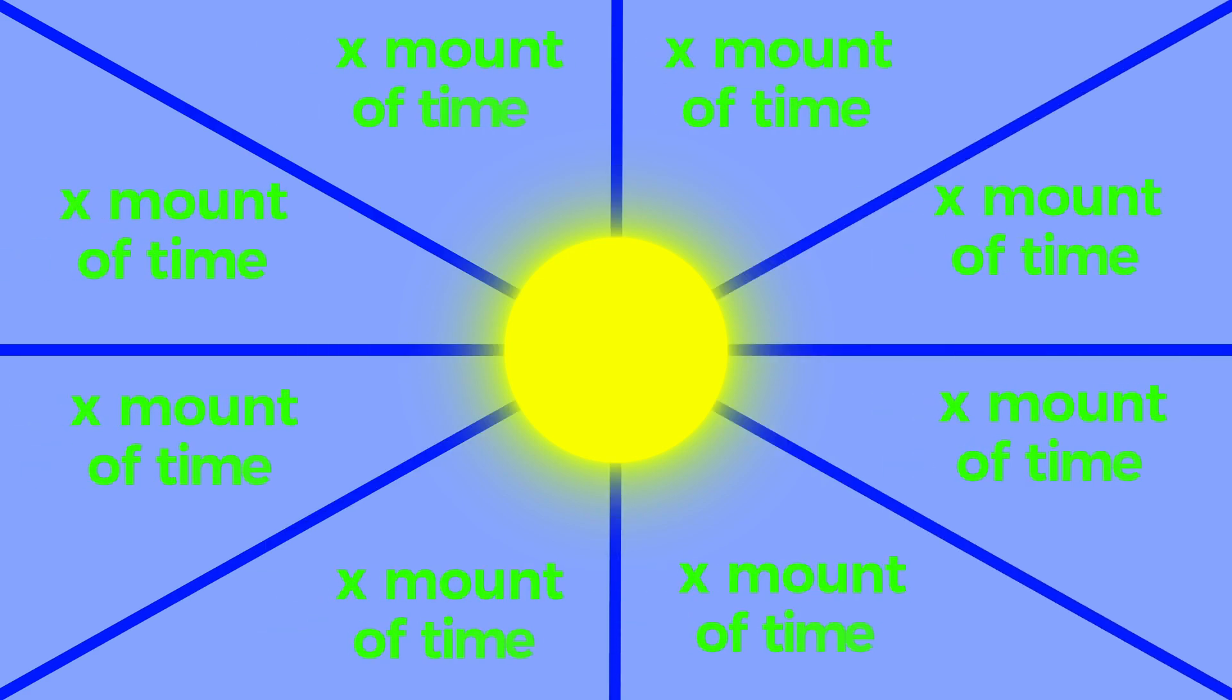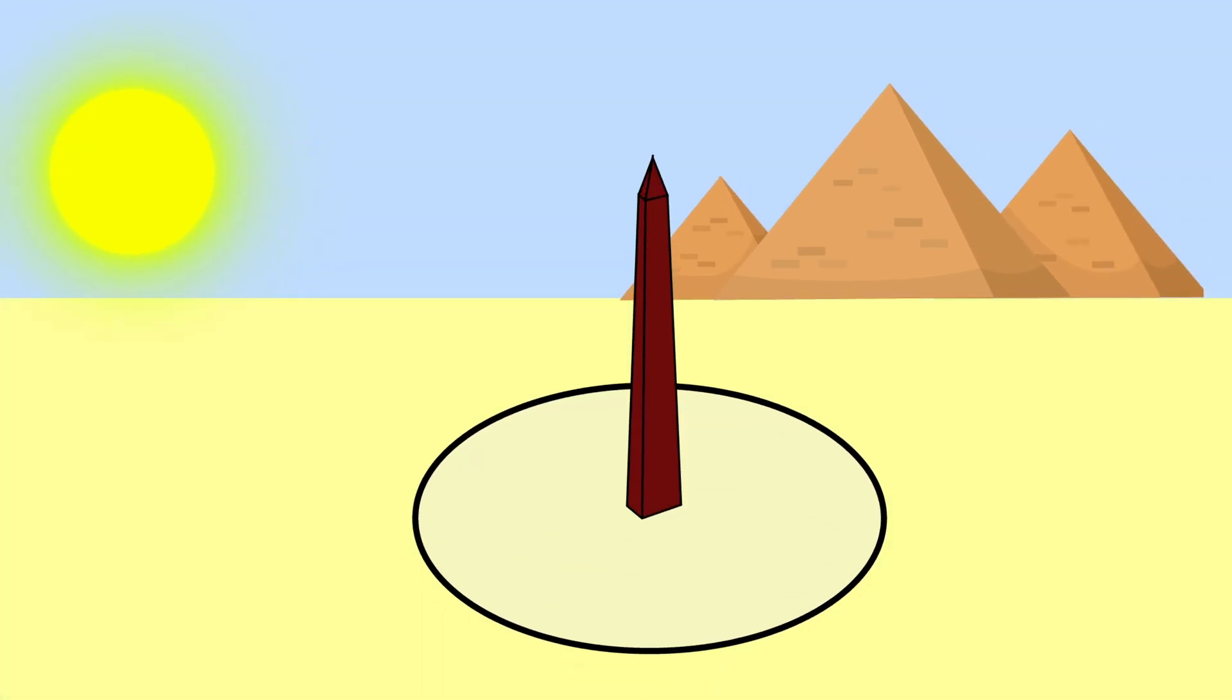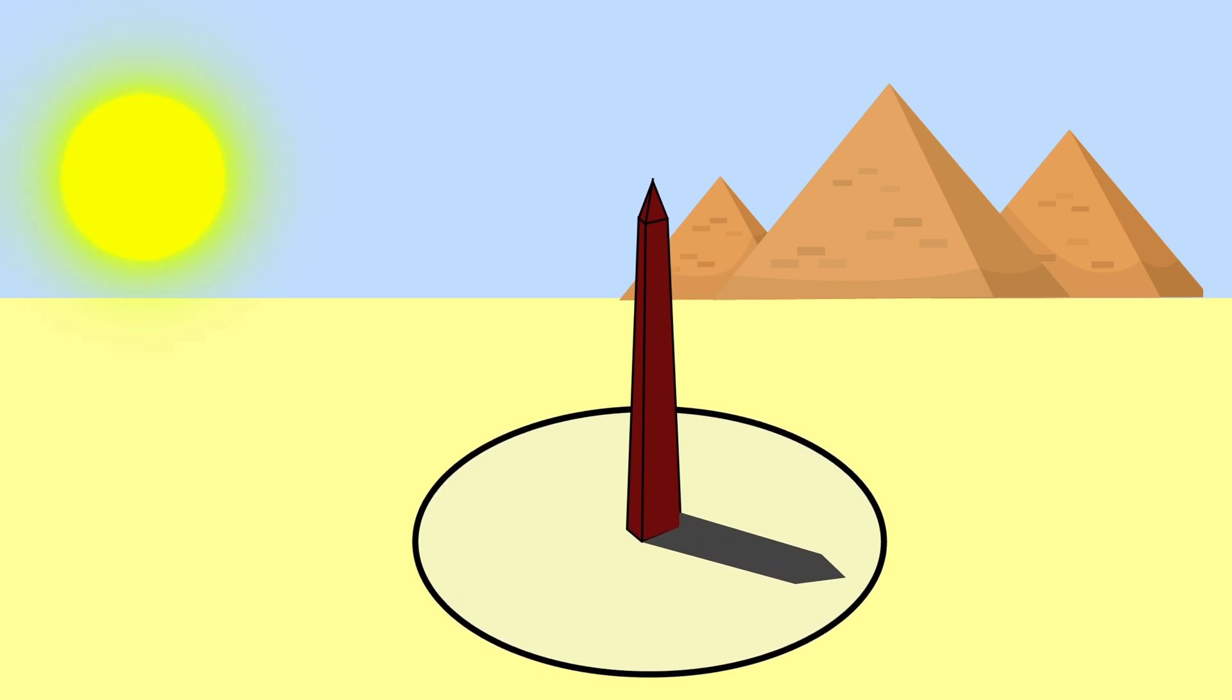The Egyptians recognized that the sun could serve as an excellent guide for dividing the day, leading to the invention of the obelisk, a tall pillar casting a shadow on the ground. By observing the shadow cast by the obelisk, the Egyptians could determine noon when the shadow was at its shortest. They then began dividing the day into time intervals based on changes in the shadow's length.